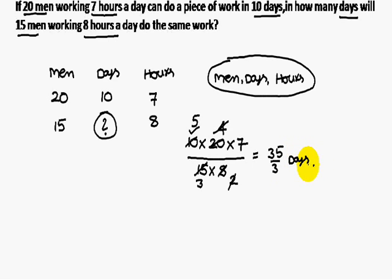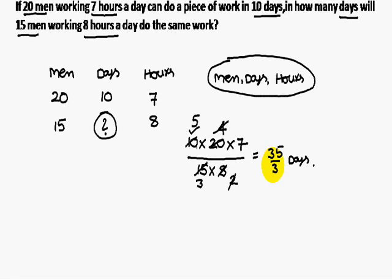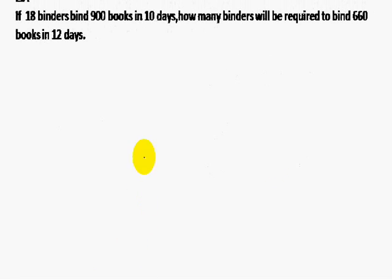To summarize: the question mark was days, so for the first statement you write men, days, and hours together in the numerator, and the second statement values go in the denominator. Simplifying gives the answer. Now moving to the third problem.